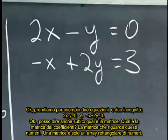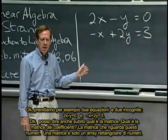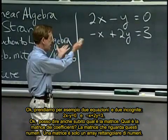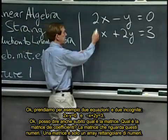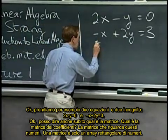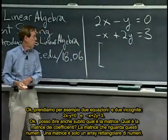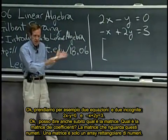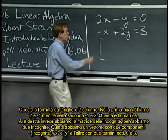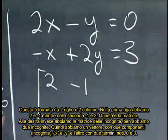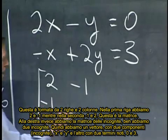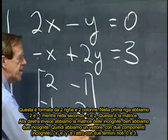Okay. I can even say right away, what's the matrix, what's the coefficient matrix? The matrix that involves these numbers. A matrix is just a rectangular array of numbers. Here it's two rows and two columns. So two and minus one in the first row, minus one and two in the second row, that's the matrix.